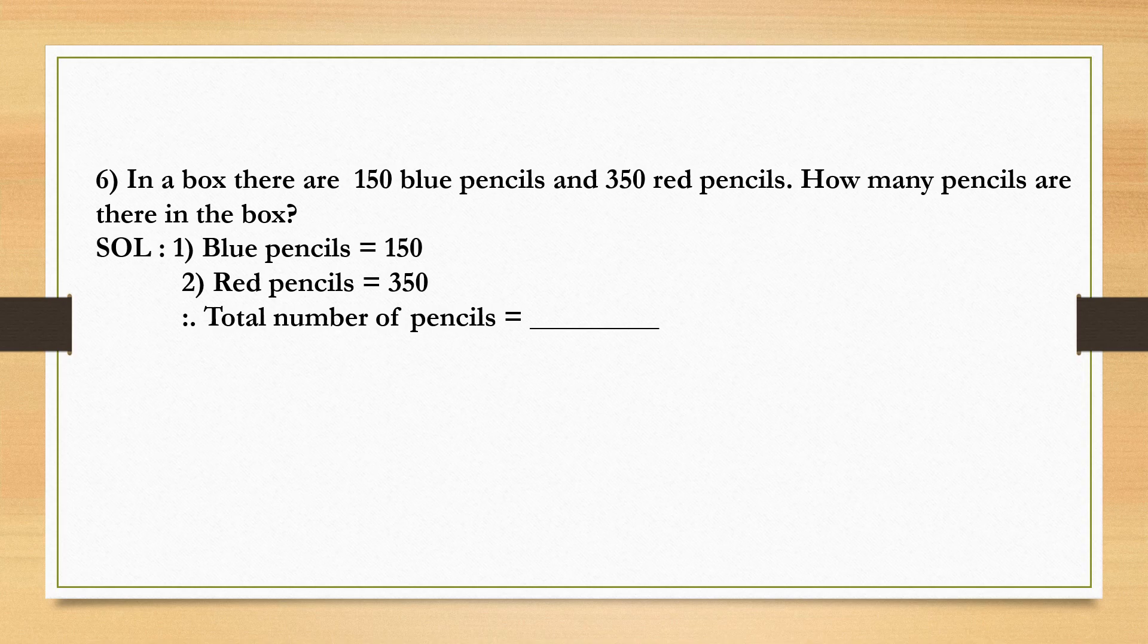In a box there are 150 blue pencils and 350 red pencils. How many pencils are there in the box? Solution number one: blue pencils equal to 150. Red pencils equal to 350.